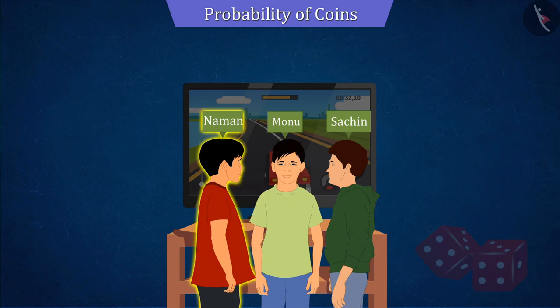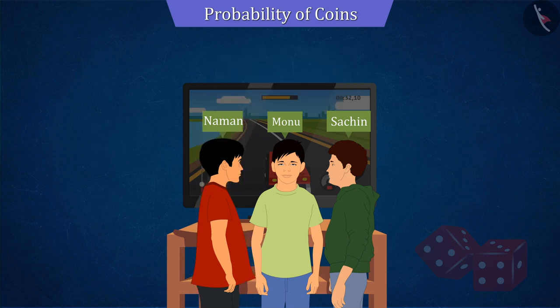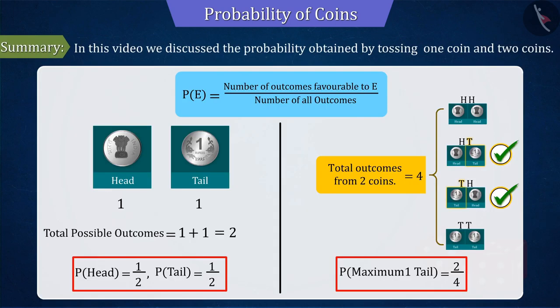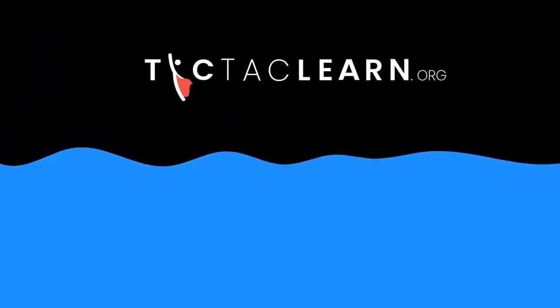But Naman is not happy with this and asks to take the decision by tossing three coins instead of two coins, which we will see in the next video. In this video, we discussed the probability obtained by tossing one coin and two coins. In the next video, we will find the probability obtained by tossing three coins.